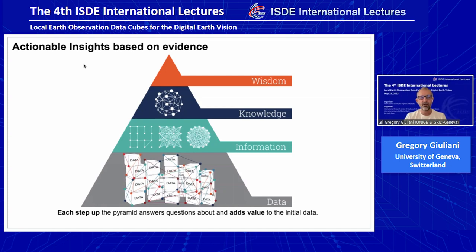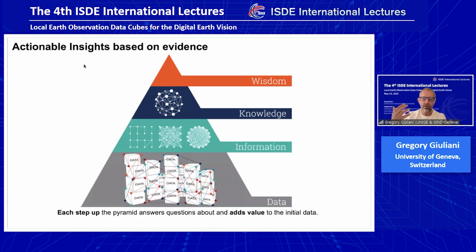When you structure this data under the form of graphs, maps, or whatever information package, then it becomes really an information. But to get the knowledge about that generated information — say, a graph that shows an increase — you need to contextualize the information you generated. Then you can give an explanation: for example, this graph shows the amount of CO2 in the atmosphere above the Mauna Loa volcano. And then you get access to knowledge, and based on that, hopefully you can be a bit wiser and take sound decisions.